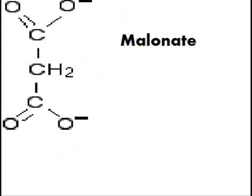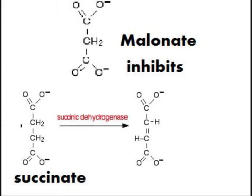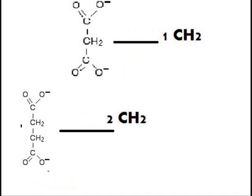Malonate ions are a great example of this process — inhibits succinate ions. As for why this is, the reason is a few, including that there's only one CH2.